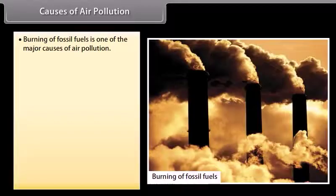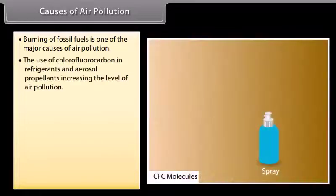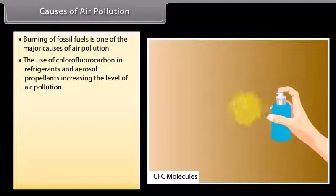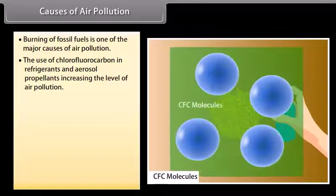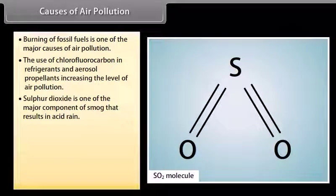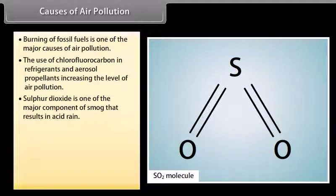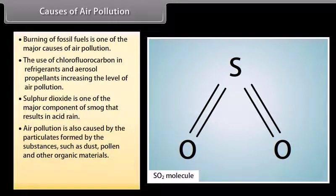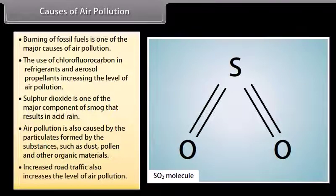Causes of air pollution. Burning of fossil fuels is one of the major causes of air pollution. The use of chlorofluorocarbons in refrigerants and aerosol propellants increases the level of air pollution. Sulfur dioxide is one of the major components of smog that results in acid rain. Air pollution is also caused by particulates formed by substances such as dust, pollen and other organic materials. Increased road traffic also increases the level of air pollution.